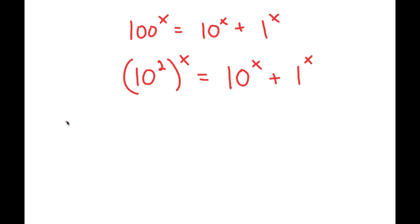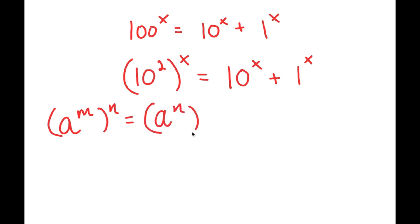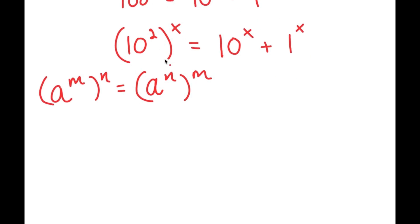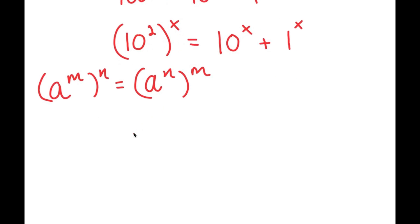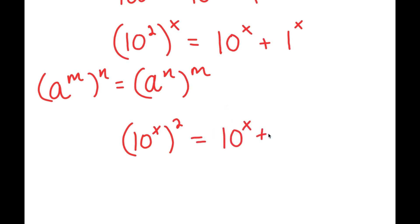If I have something in the form a to the power of m to the power of n, this is equal to a to the power of n to the power of m. So 10 to the power of 2 to the power of x is equal to 10 to the power of x to the power of 2. So now I have 10 to the power of x to the power of 2 is equal to 10 to the power of x plus 1 to the power of x.